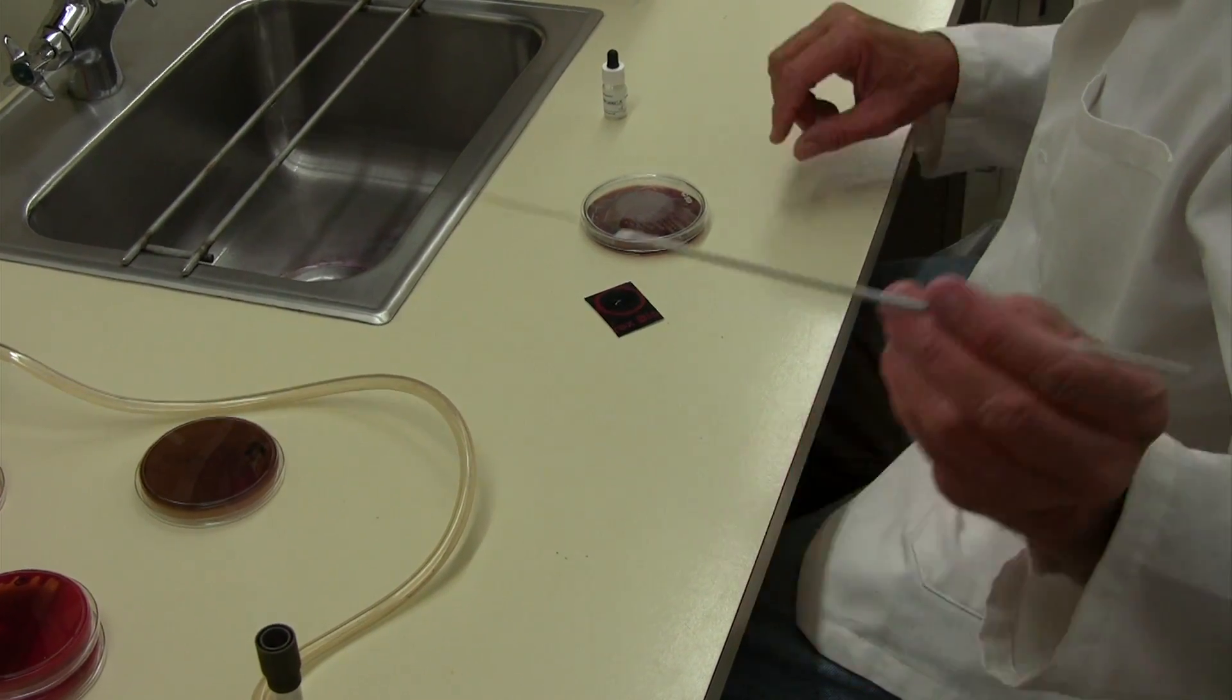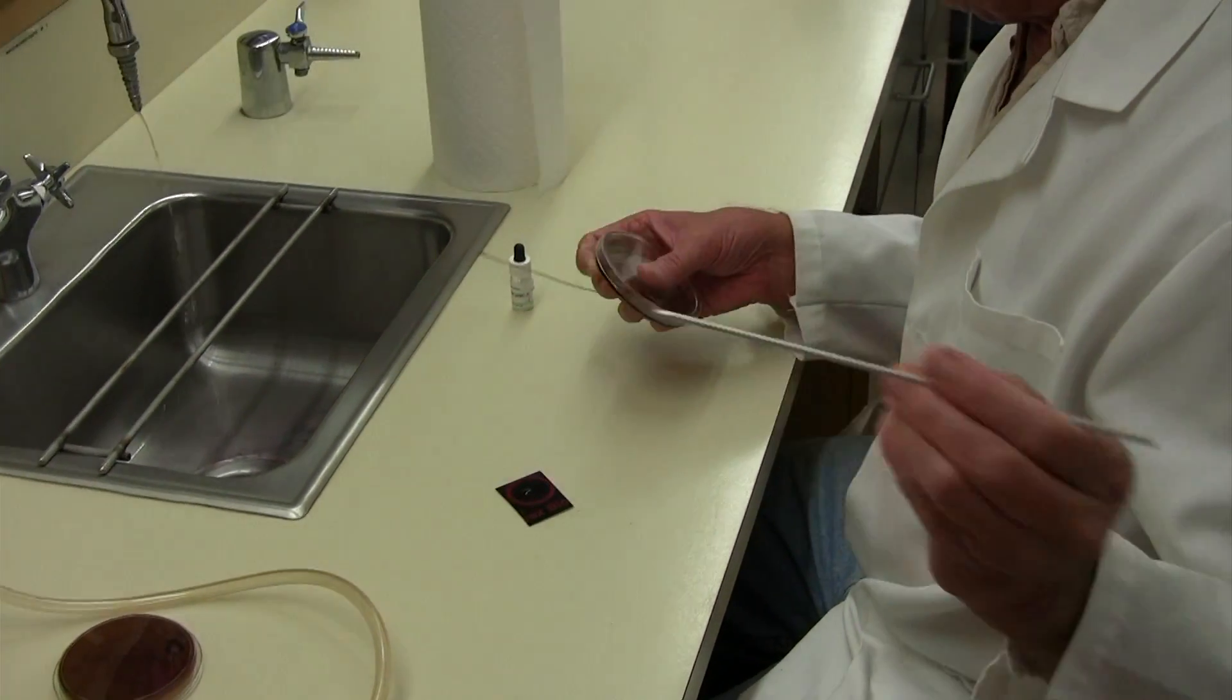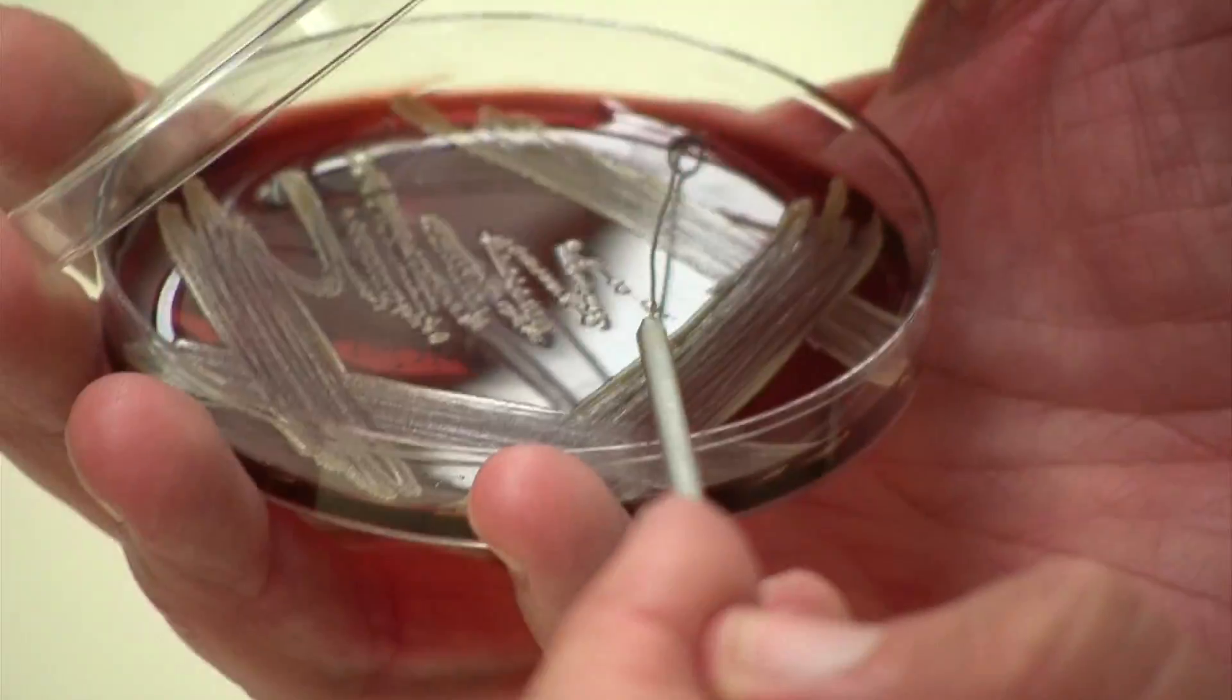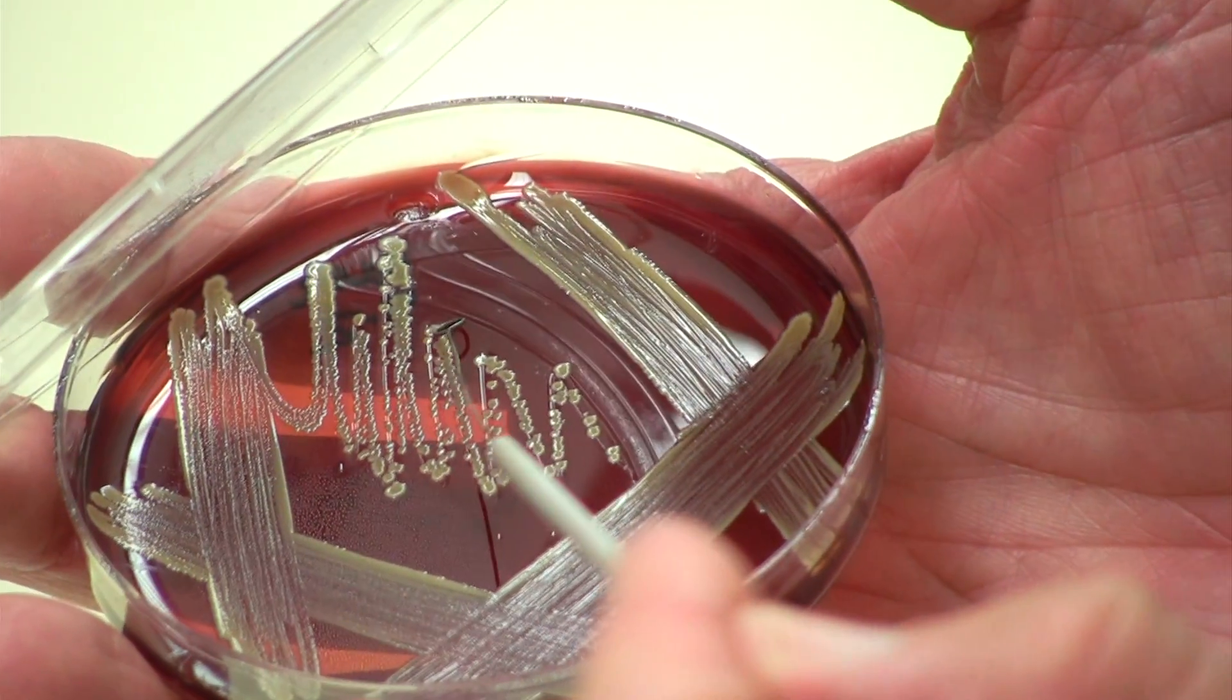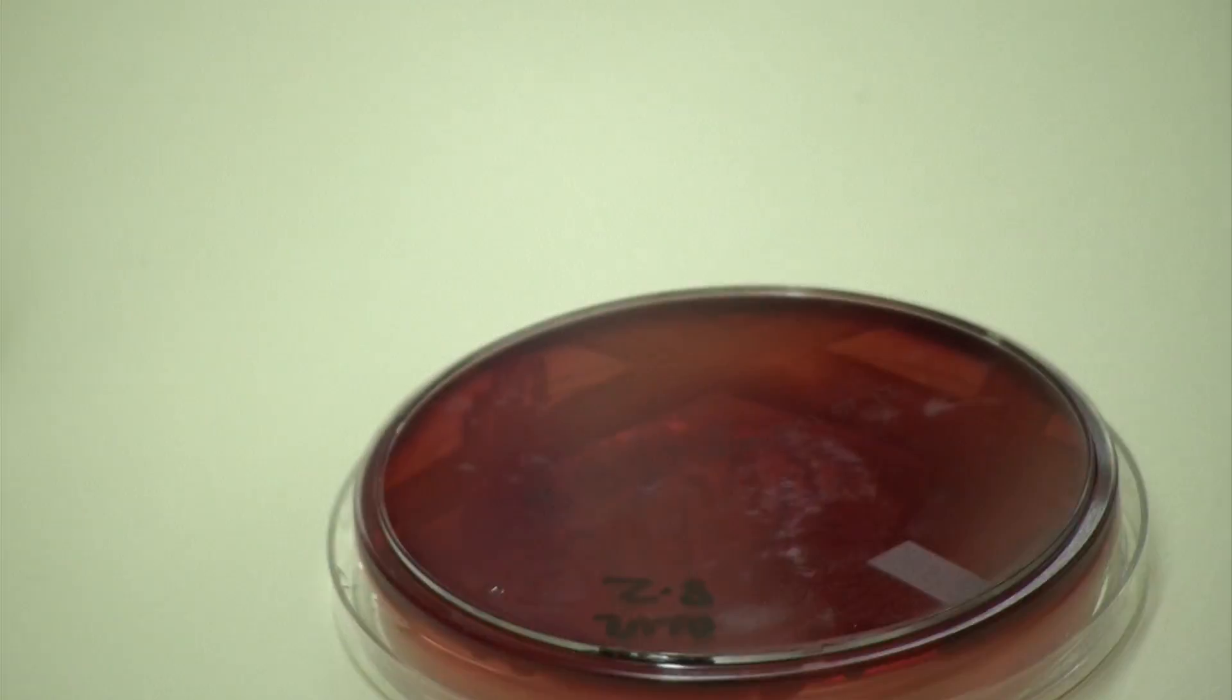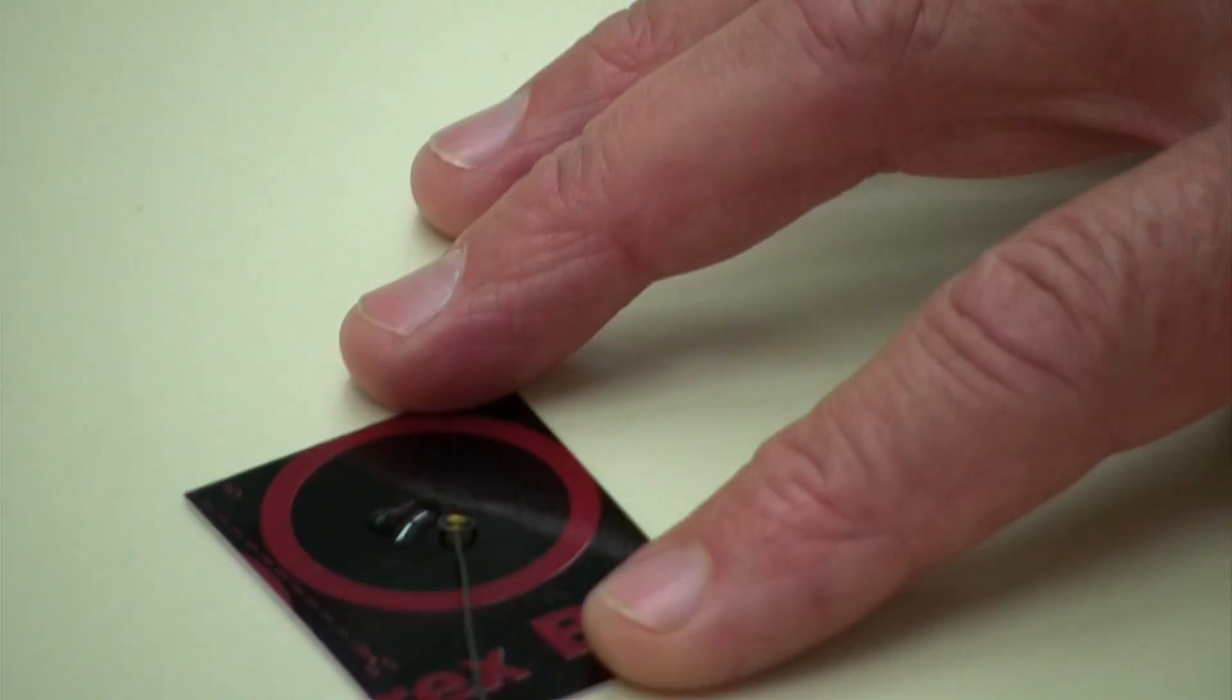Then we are going to cool the loop on the edge of the agar and take a lot of bacteria from the plate. At the tip of the loop, get a lot of bacteria and place it inside the water.